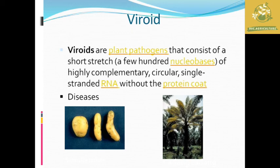After that we are going to see about viroids. Viroids are plant pathogens which consist of a stretch of nucleic base which is highly compact, circular, and singular RNA without a protein coat. The name viroid comes from virus — they have a similar structure and mechanism as virus, but the only differentiation is the absence of a protein coat in viroids.